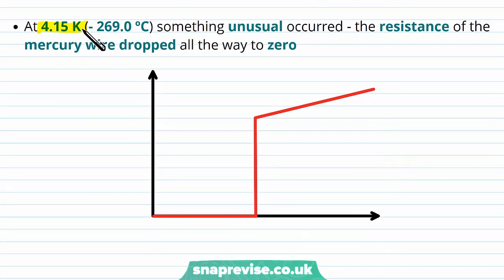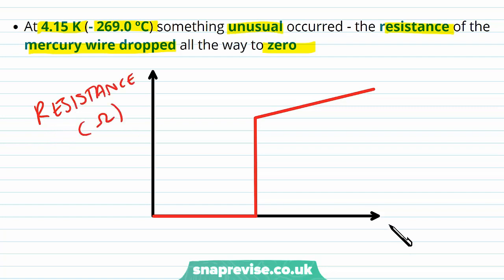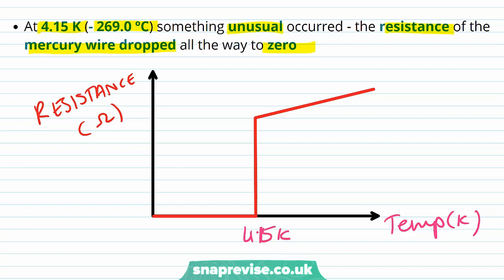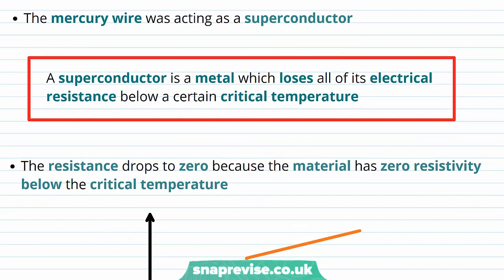At 4.15 Kelvin, or minus 269 degrees Celsius — showing how extreme these temperatures are — something unusual occurred: the resistance of the mercury wire dropped all the way to zero. On a graph of resistance versus temperature in Kelvin, at 4.15 Kelvin the resistance just dropped to zero. At this temperature the mercury wire was acting as a superconductor.